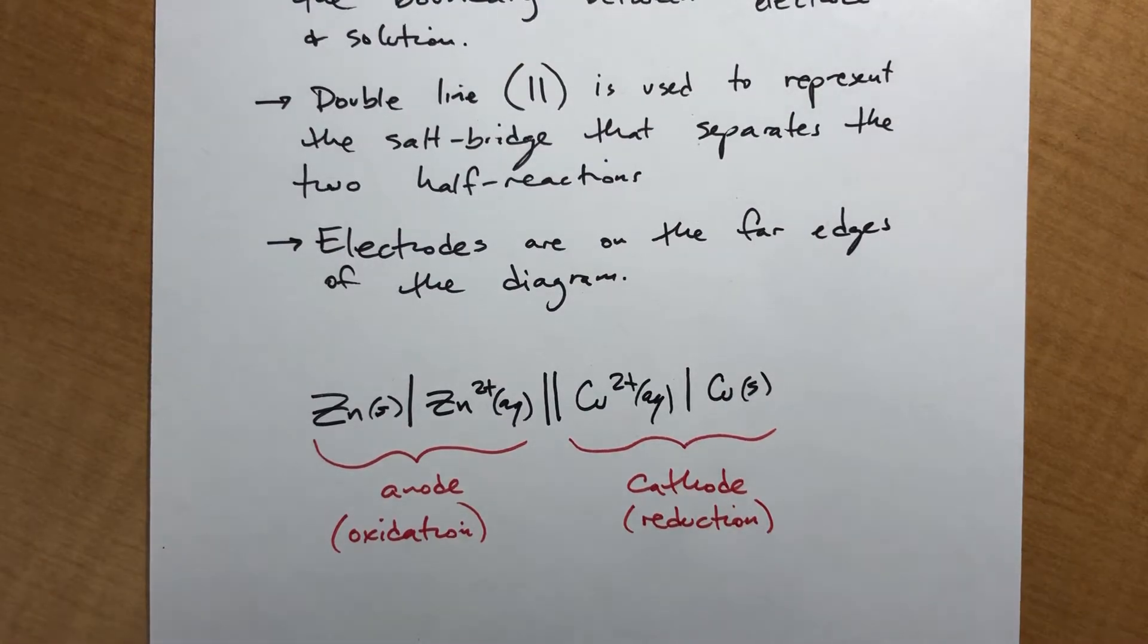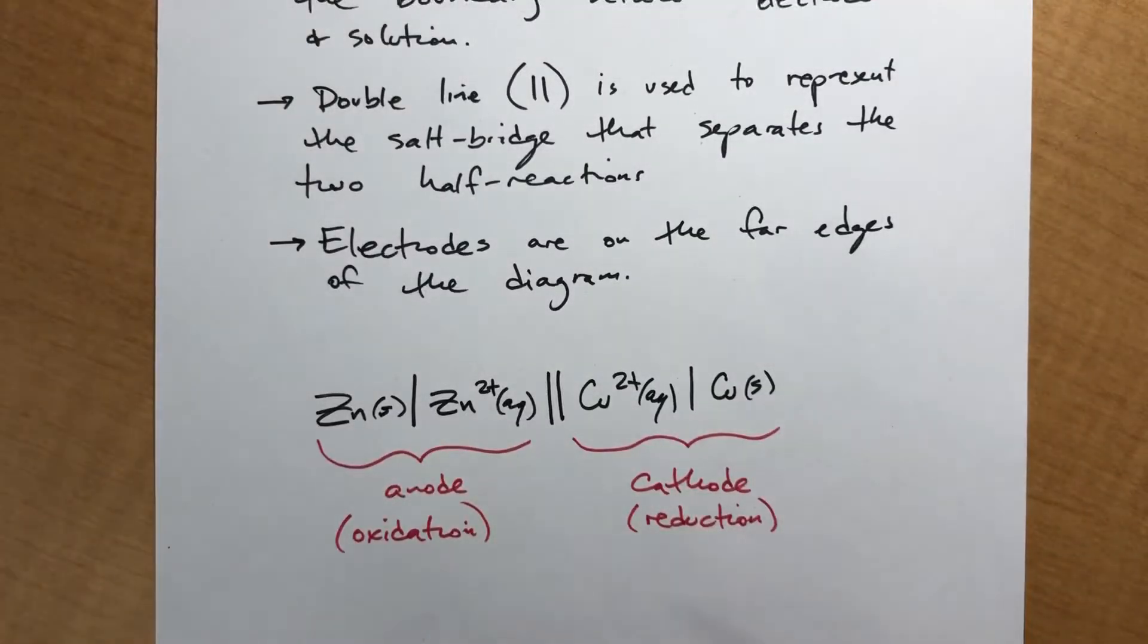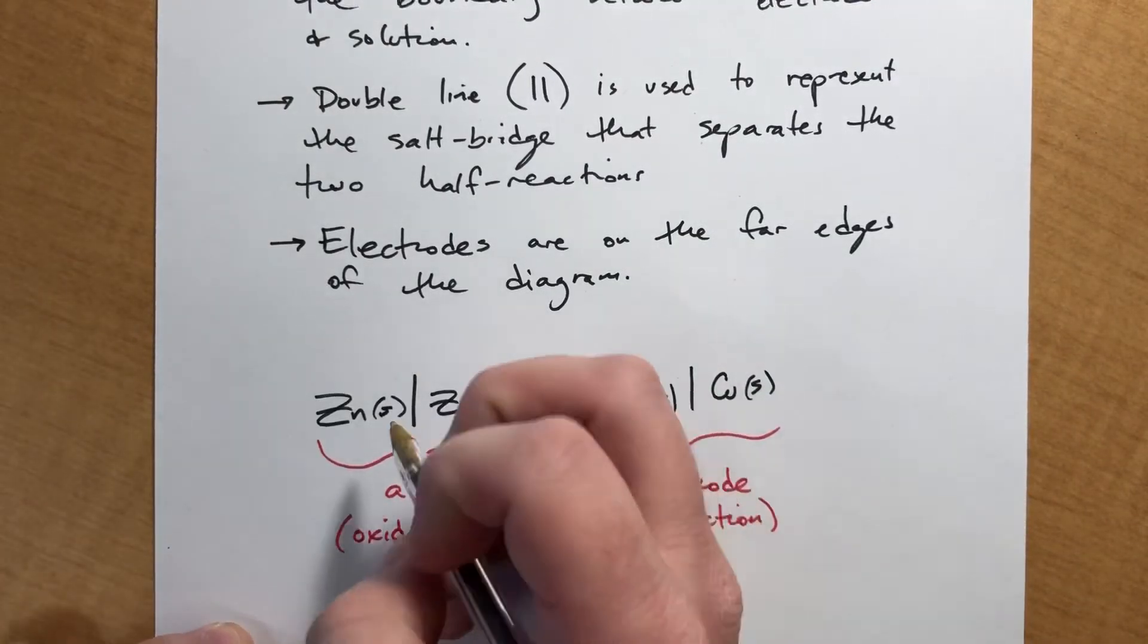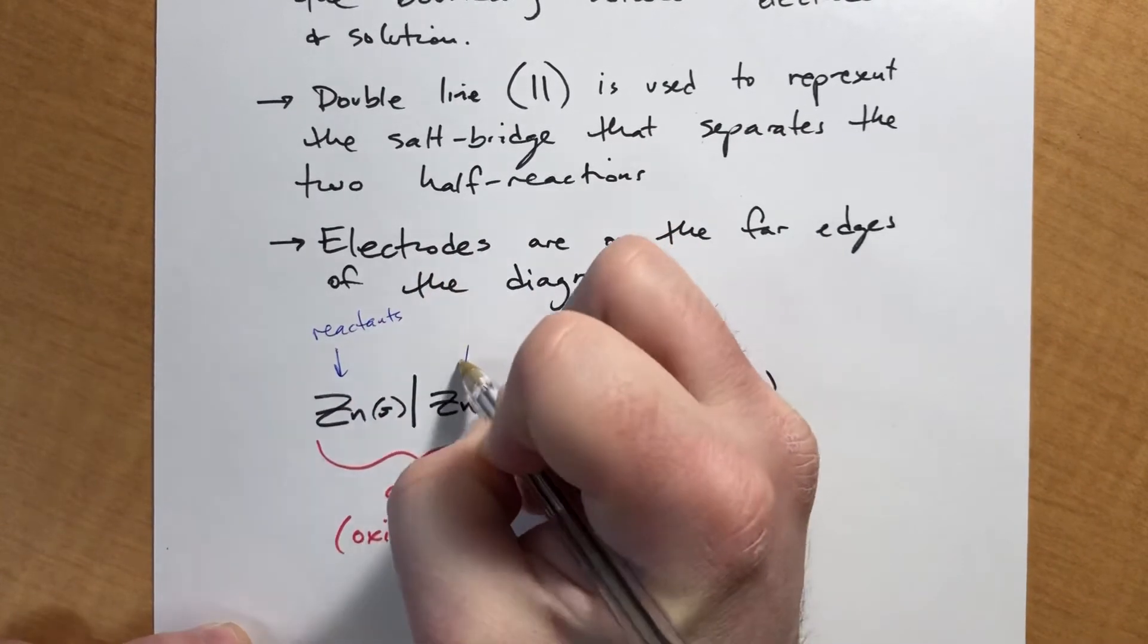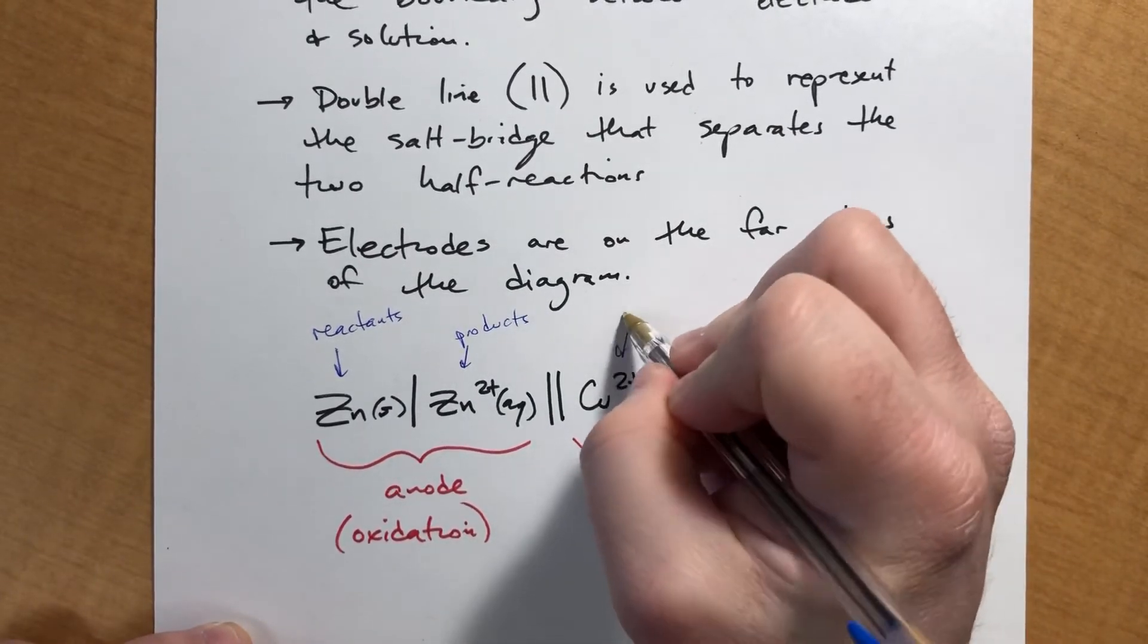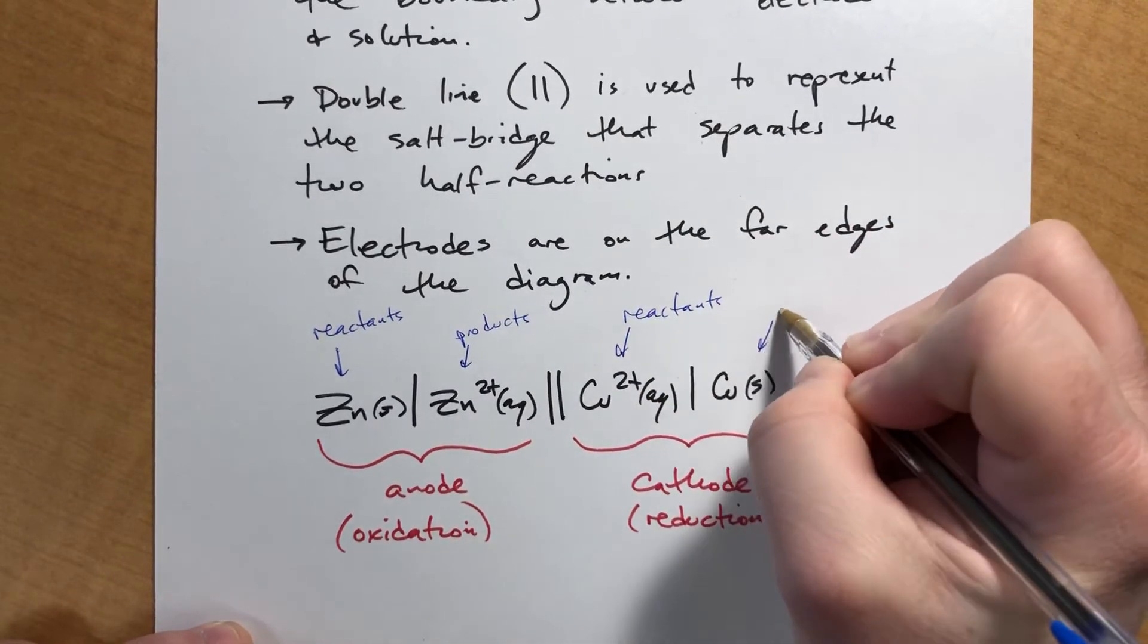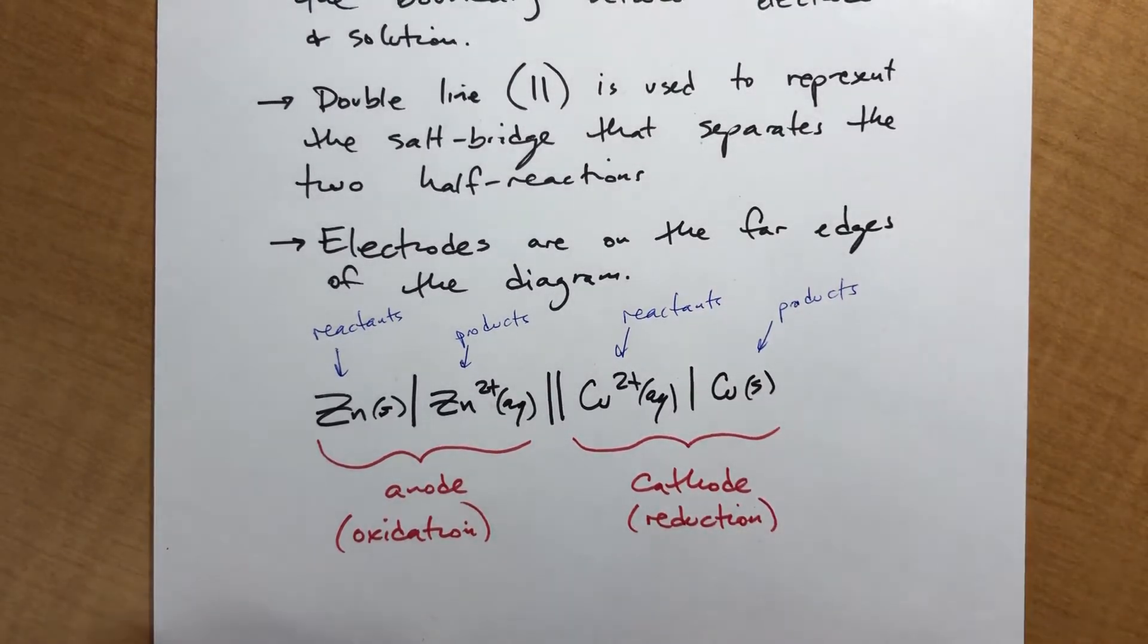And here's the other nice thing. We had the reactions for each, the reactions kind of written out at the bottom. They're already in the right order. So for this half reaction, this is reactants, this is products. For this half reaction, this is reactants, and this is products.